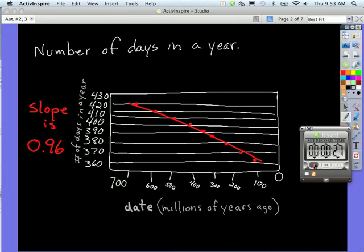So, 700 million years ago, the days for a year were about 421 per year. That's a lot more days than we have in a year now.